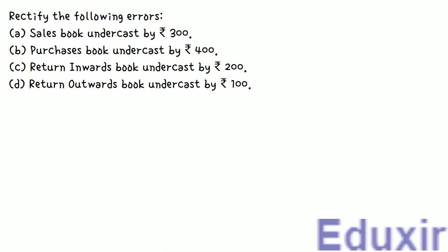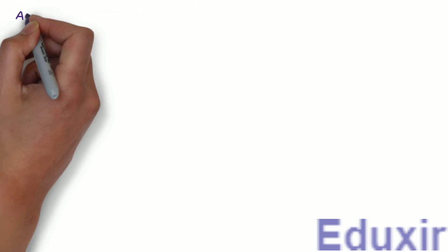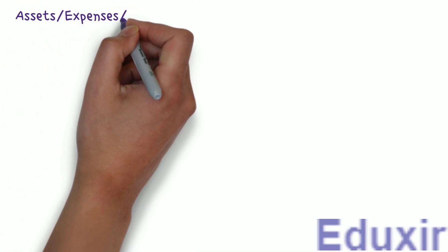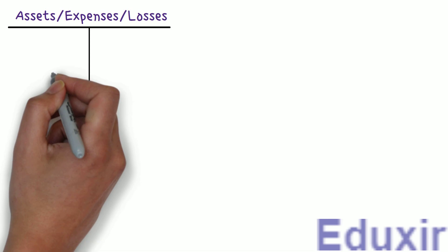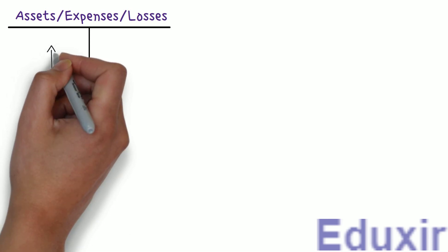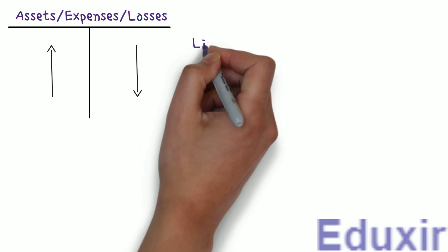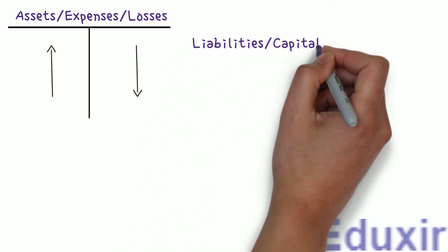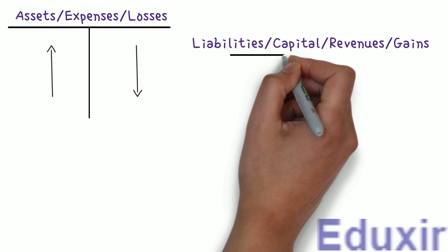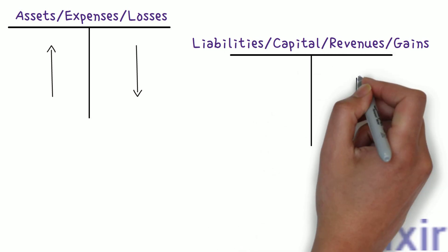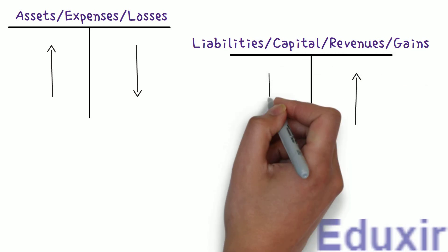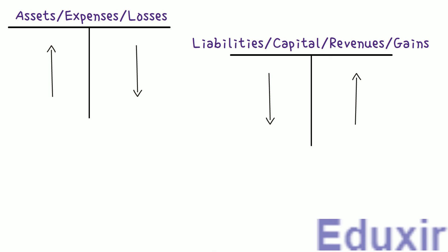Before we proceed with the analysis of these errors, let us first do a small recap. In case of assets, expenses, or losses, any increase should be debited and any decrease should be credited. Whereas in case of liabilities, capital, revenues, or gains, any increase should be credited and any decrease should be debited. From the point of view of rectification, the errors may be classified into the following categories.